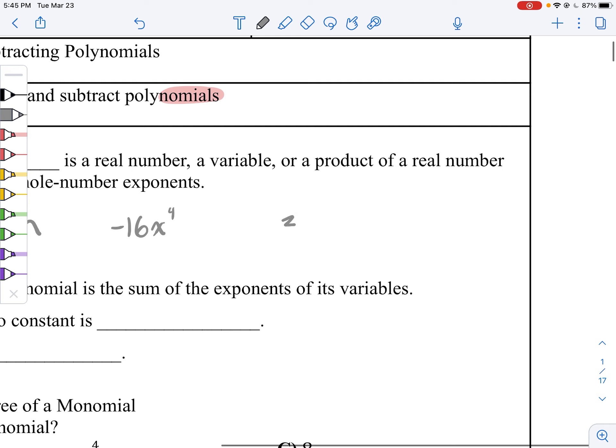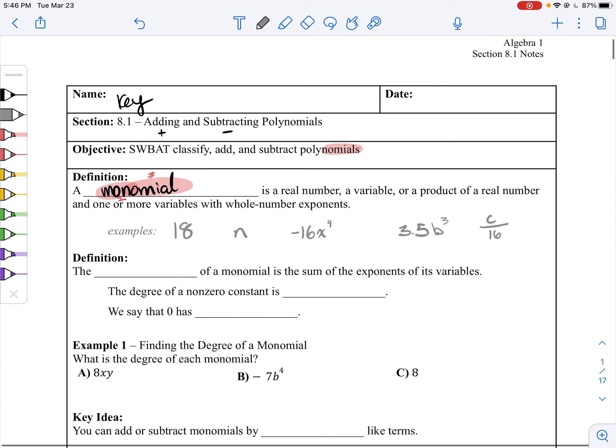Our exponents have to be whole numbers, but our numbers don't have to be. So you can do 3.5, you can have a coefficient 3.5b cubed, whatever. You can even do like a variable over a number like c over 10. That's great too.